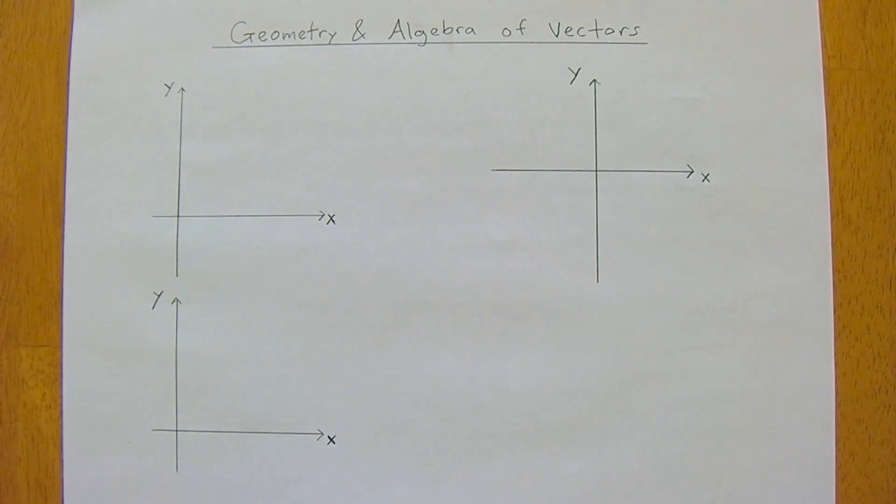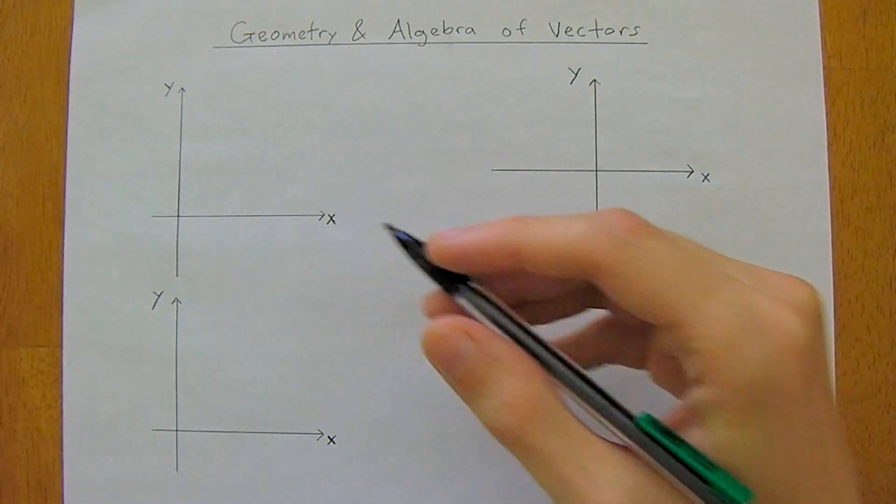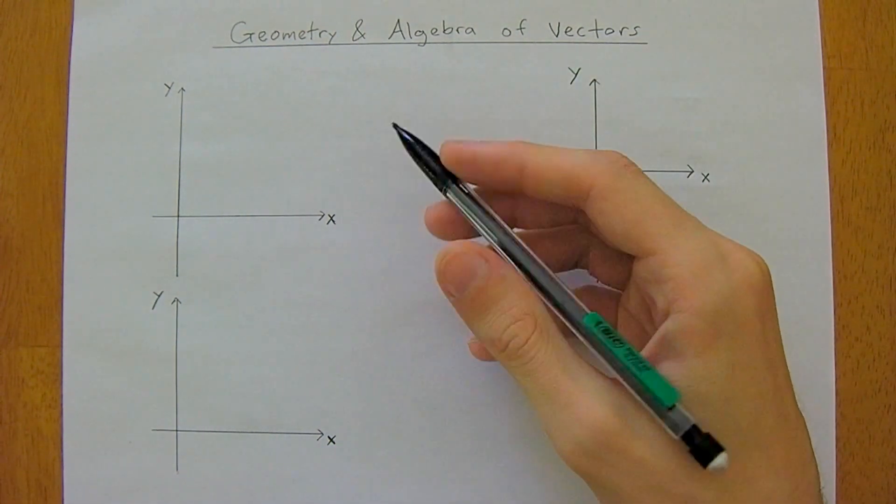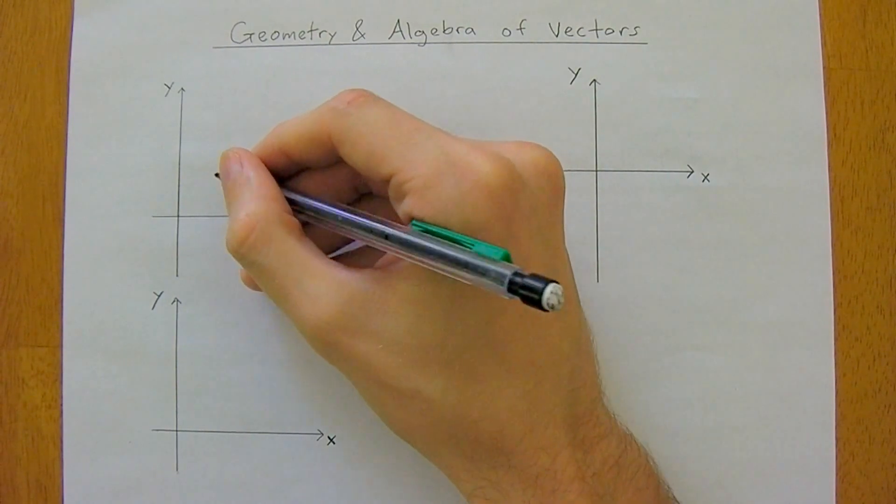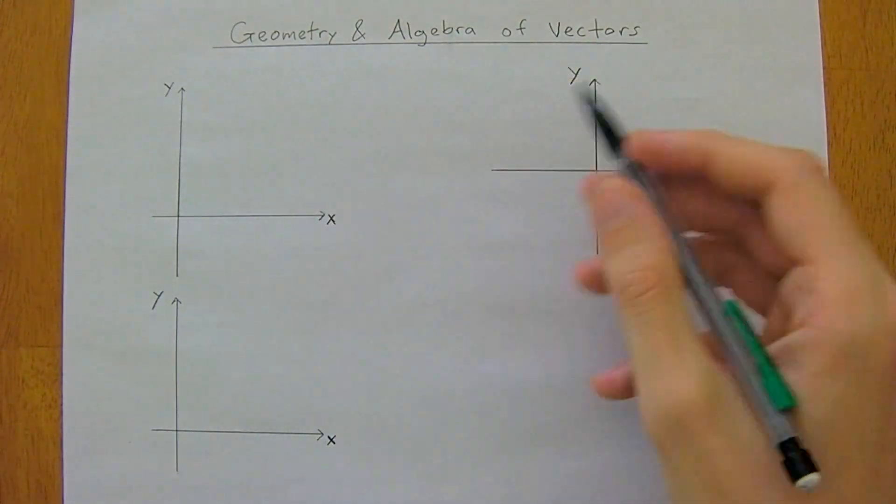Vector comes from the Latin word to carry. The difference between a vector is that a vector carries a length and a direction. By length, the more technical term we use is displacement, so we talk about the displacement of vectors.